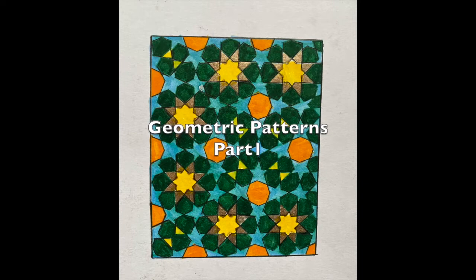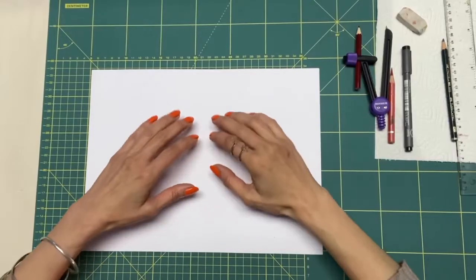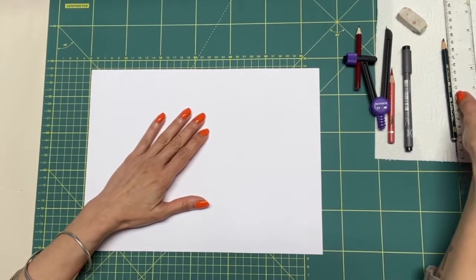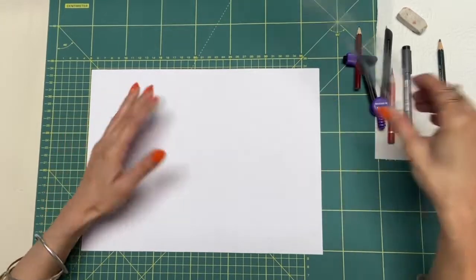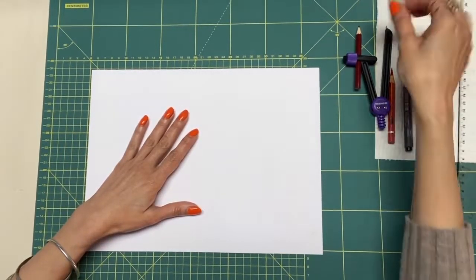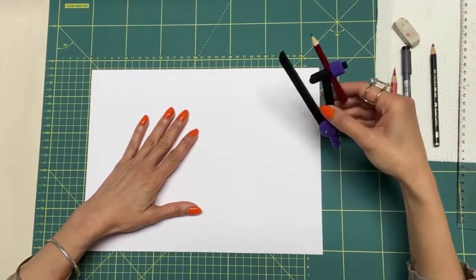This video is part one of geometric patterns tutorials. We need a ruler, pencil, eraser, compass, pen and color pencils.